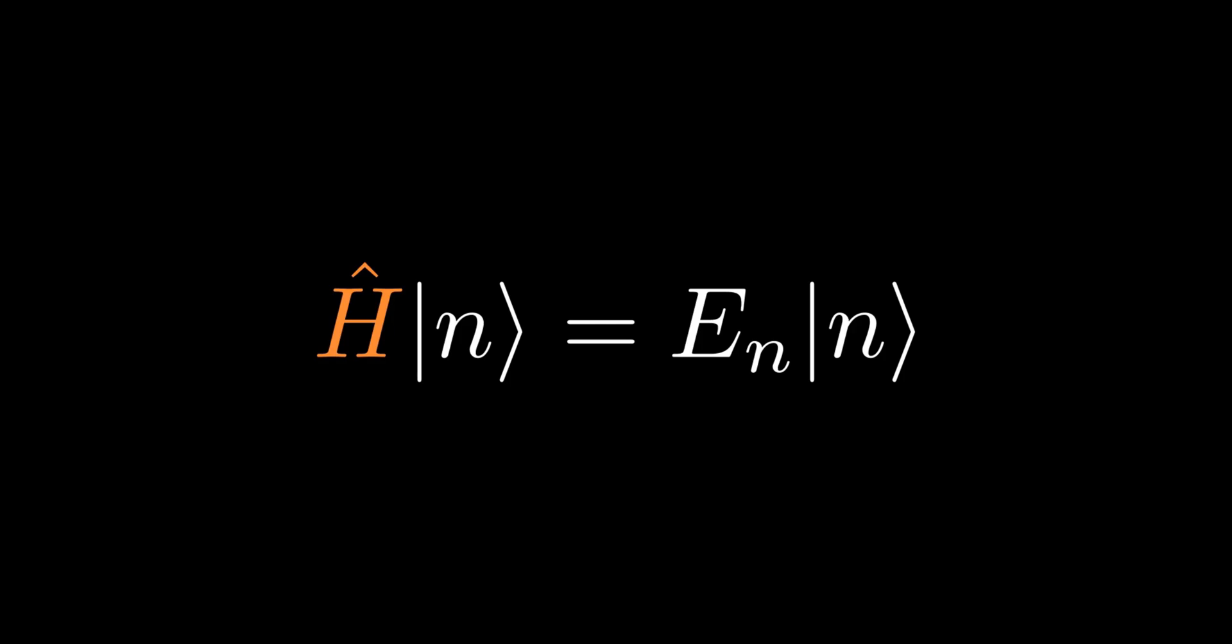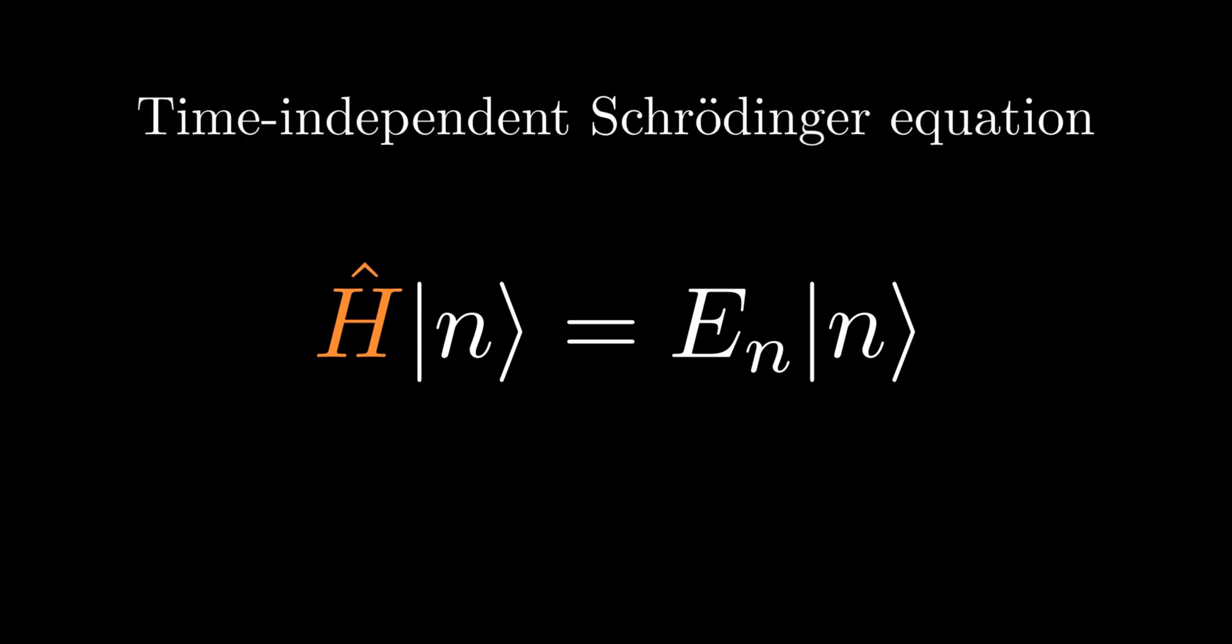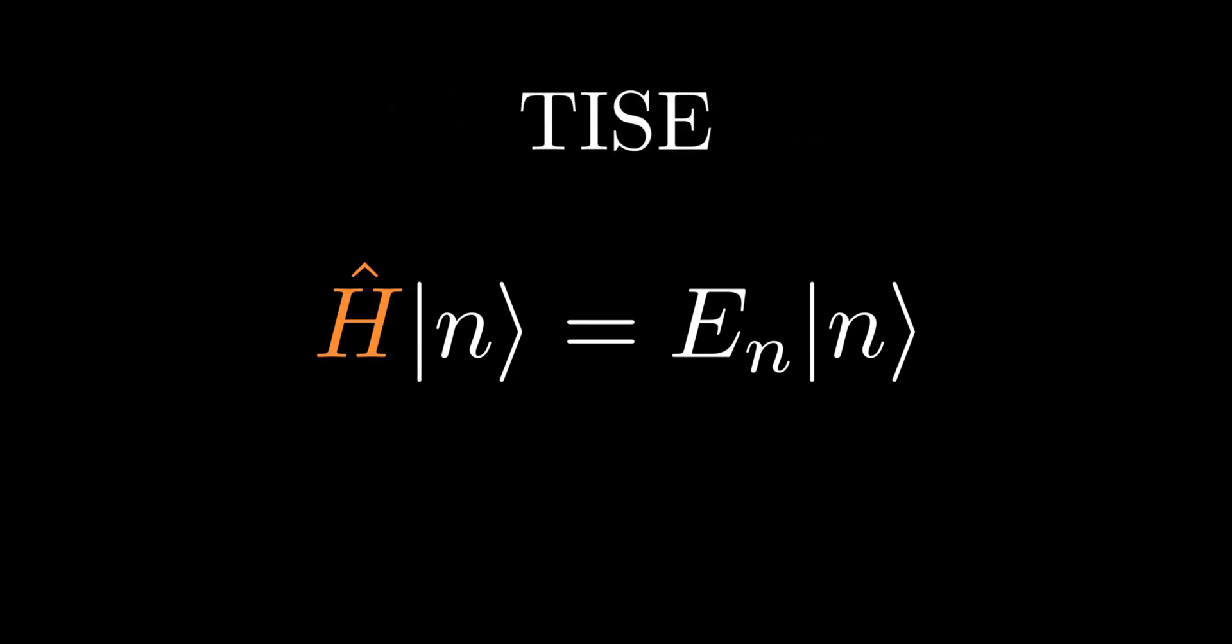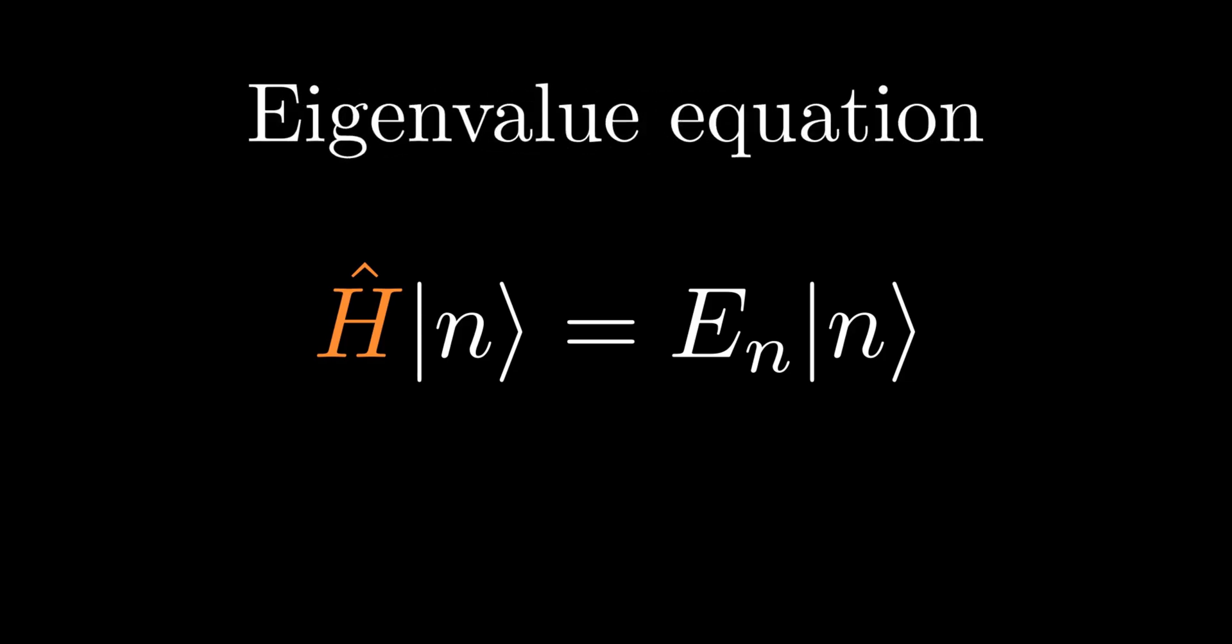We can write H hat on ket n equals to En ket n. This is the time-independent Schrödinger equation, and we shall refer to this equation as TISE. This type of equation where the effect of the linear operator merely scales the special state of interest is called eigenvalue equation, and most of quantum mechanics is centered around solving this equation, analogous to how classical mechanics centered around solving Newton's second law.